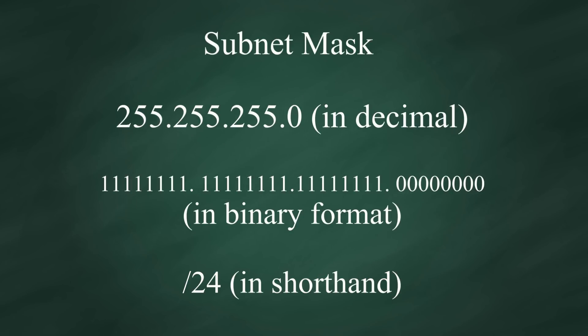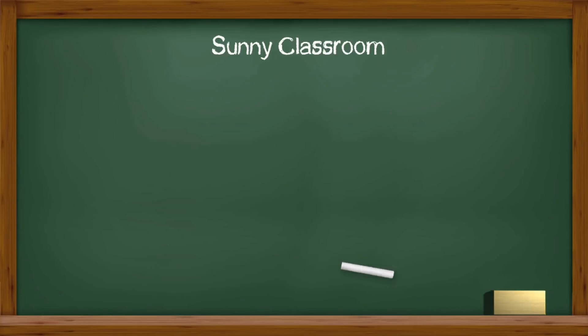In shorthand, we use slash 24, which simply means this subnet mask has 24 ones, the rest is 8 zeros. Together, it is 32-bit long. Here are more examples.